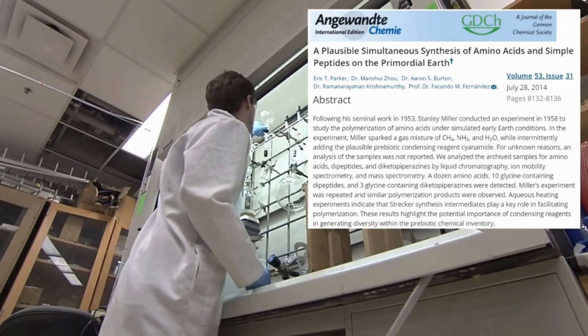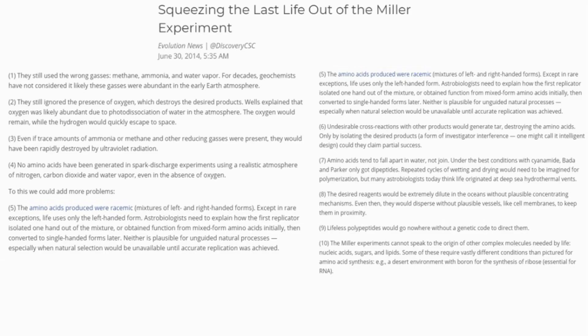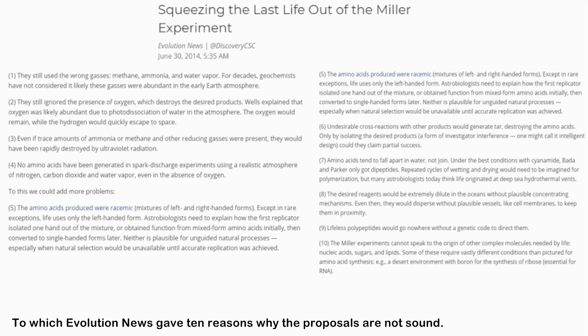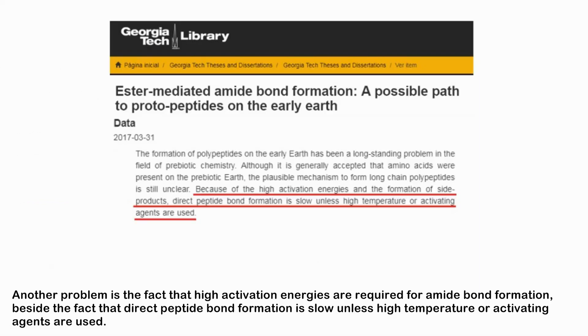A peer-reviewed paper published in 2014 tried to answer the question of prebiotic polymerization on early Earth, to which evolution news gave ten reasons why the proposals are not sound. Another problem is the fact that high activation energies are required for amide bond formation, and direct peptide bond formation is slow unless high temperature or activating agents are used.